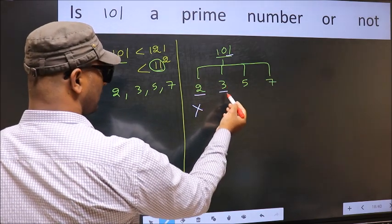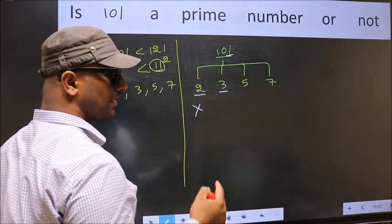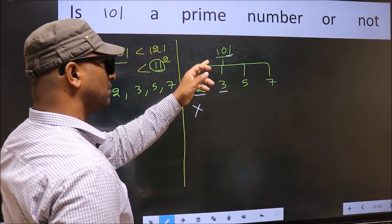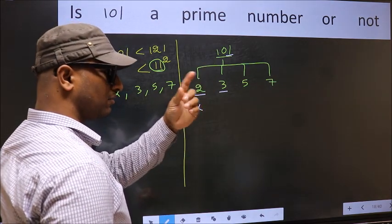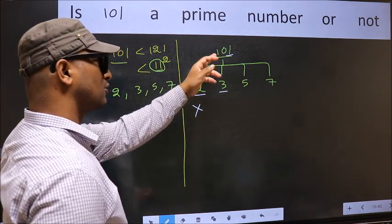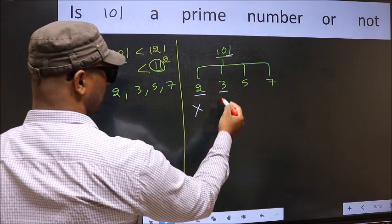Next, number 3. To check divisibility by 3, for that add the digits. 1 plus 0 plus 1, we get 2. And 2 is not divisible by 3. So this number also not divisible by 3.